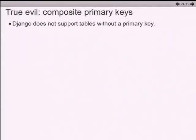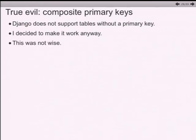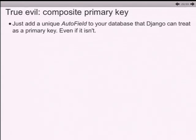Django doesn't support tables without a primary key - it doesn't work correctly without a unique field it can be confident is unique. But what you can do is lie: go into the models and say 'this field is my primary key,' and Django will treat it as such and everything will be fine - except it's not fine at all. If you're ever in this situation, just add a primary key to your database; it's really easy and will save you a lot of pain.